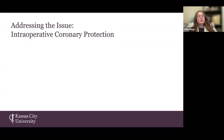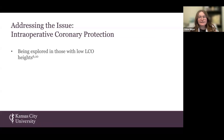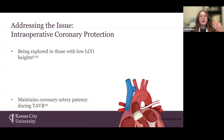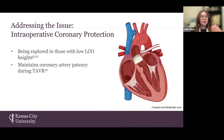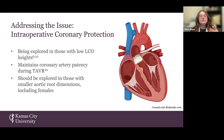While imaging can be used as a tool for preoperative planning, we also have an option for mitigating the risk of COO intraoperatively. Currently, coronary protection is being explored as a strategy in patients with low LCO heights observed on CT. Coronary protection involves inserting a guide wire, stent, or coronary balloon into a coronary artery to maintain its patency during TAVR. While this is only being explored in those with low LCO heights, our data suggests that this intraoperative procedure may also be beneficial for those with smaller overall aortic root dimensions, including females.